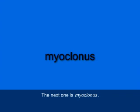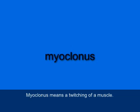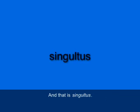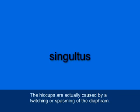The next one is myoclonus, M-Y-O-C-L-O-N-U-S. Myoclonus means a twitching of a muscle — kind of like a tic. Finally, we have a good example of a type of myoclonus: singultus, S-I-N-G-U-L-T-U-S. Singultus is the medical term for the hiccups, which are actually caused by a twitching or spasming of the diaphragm.